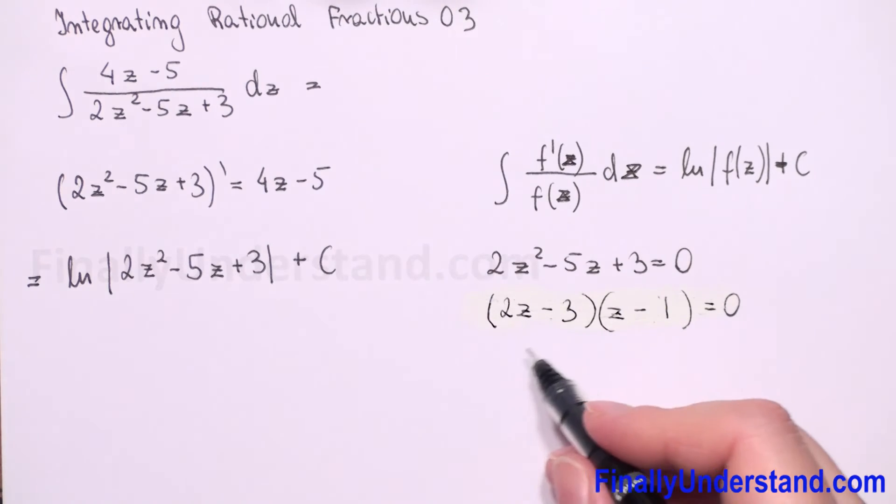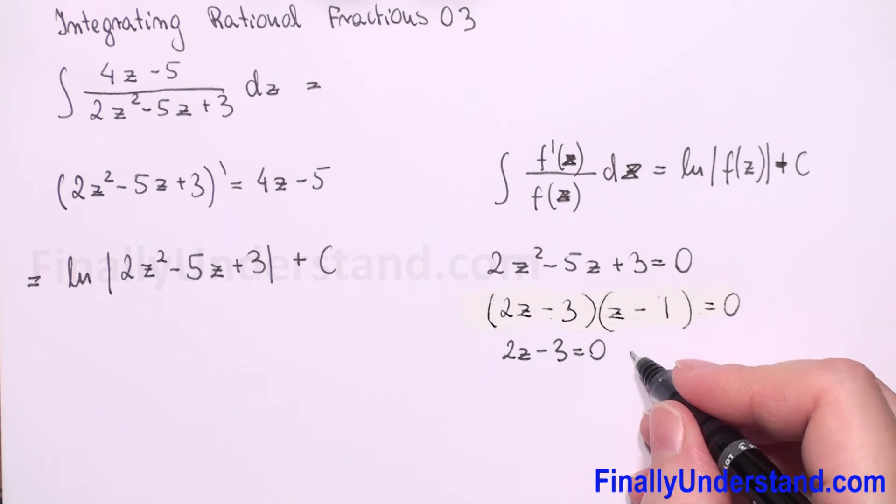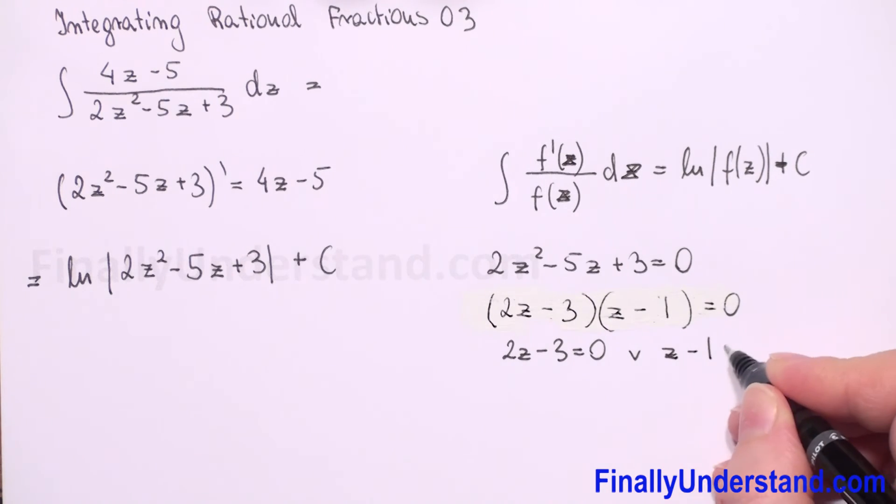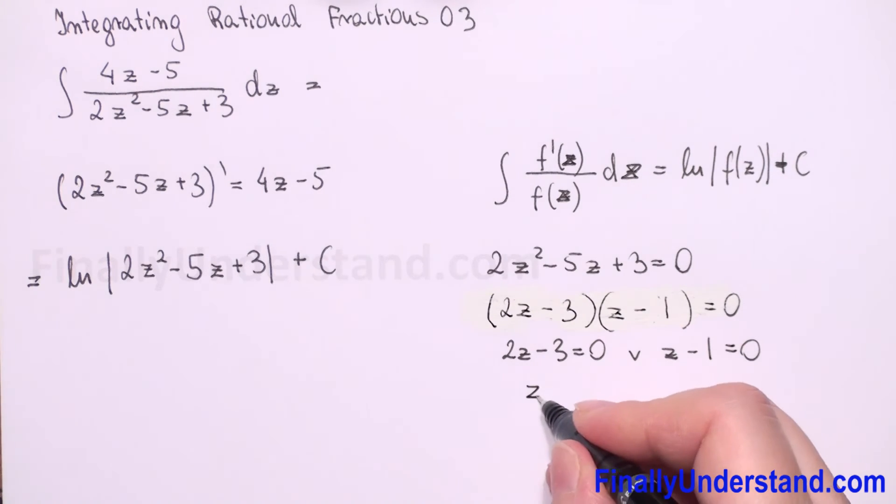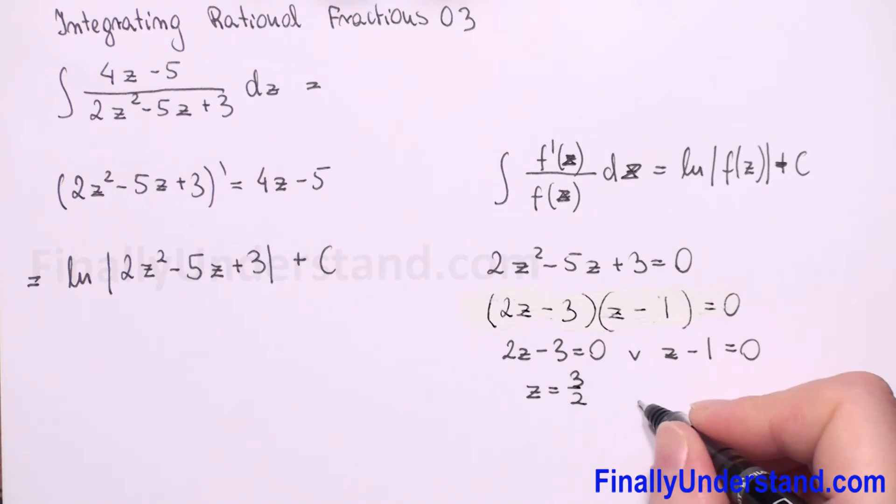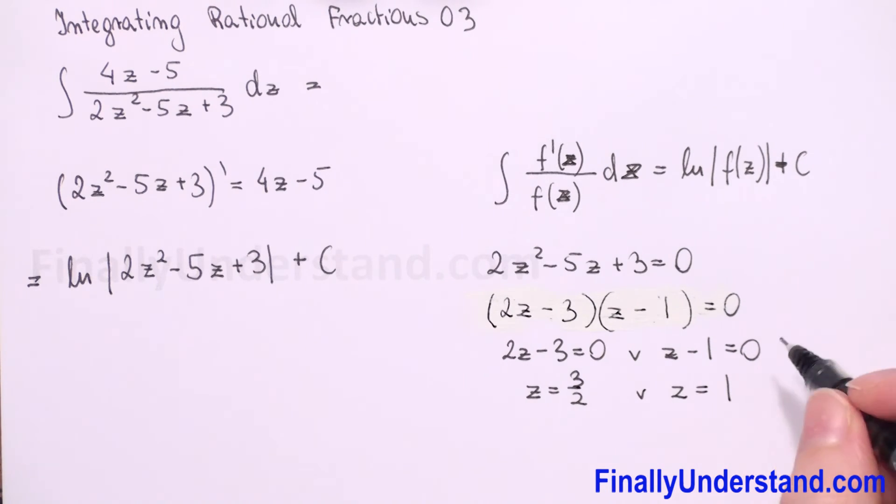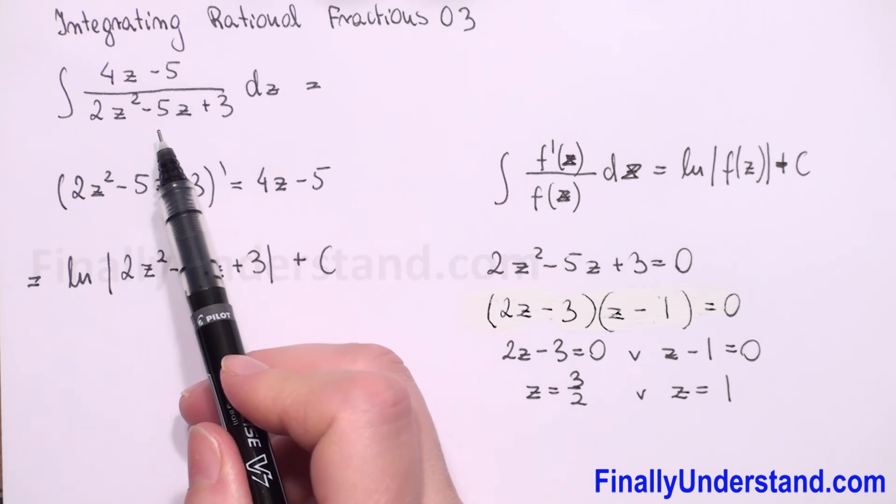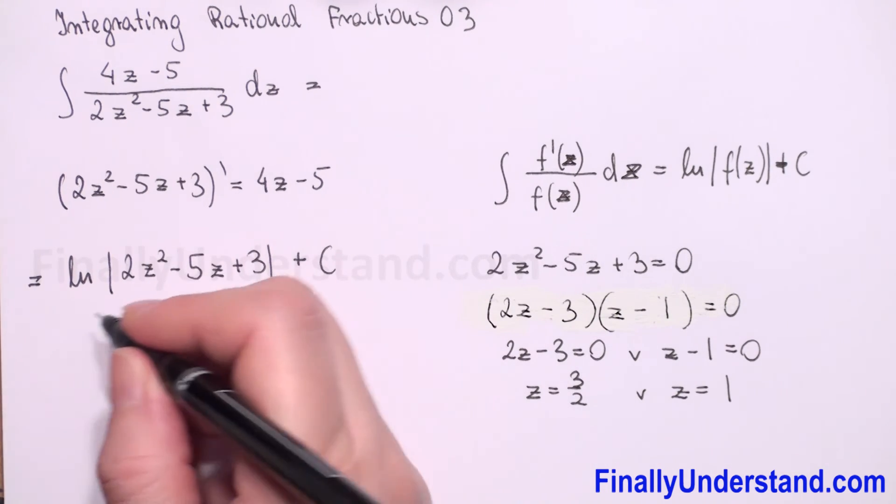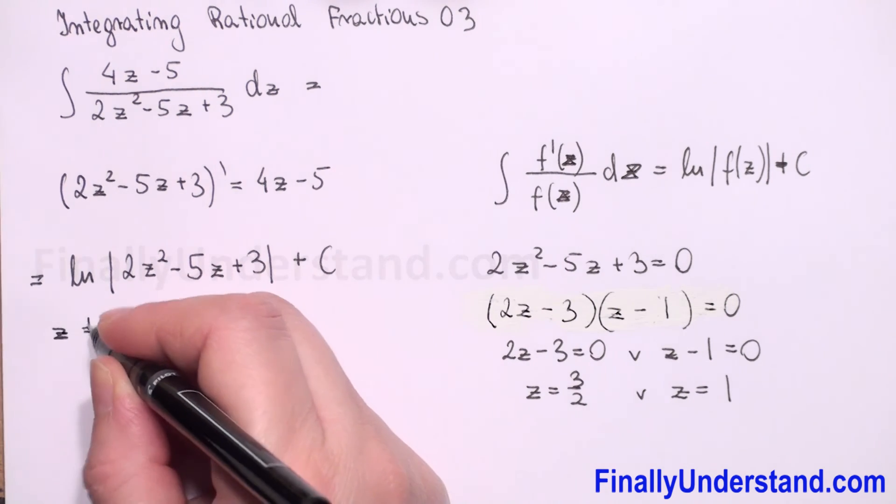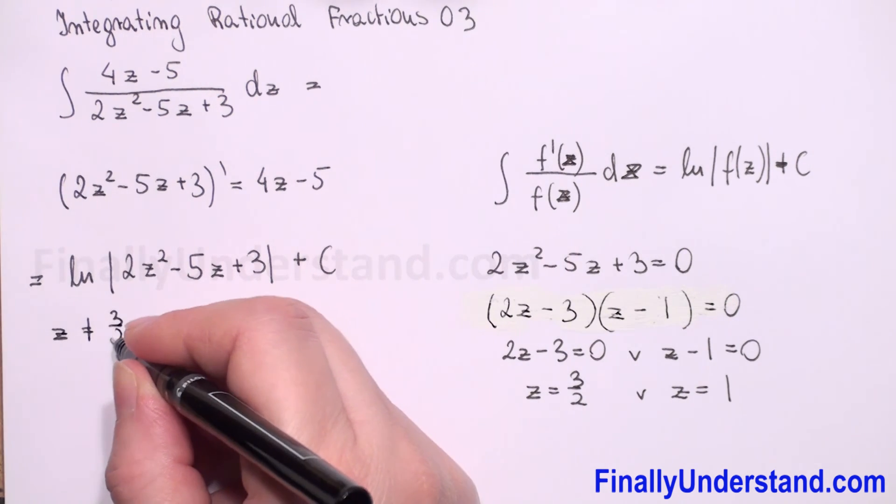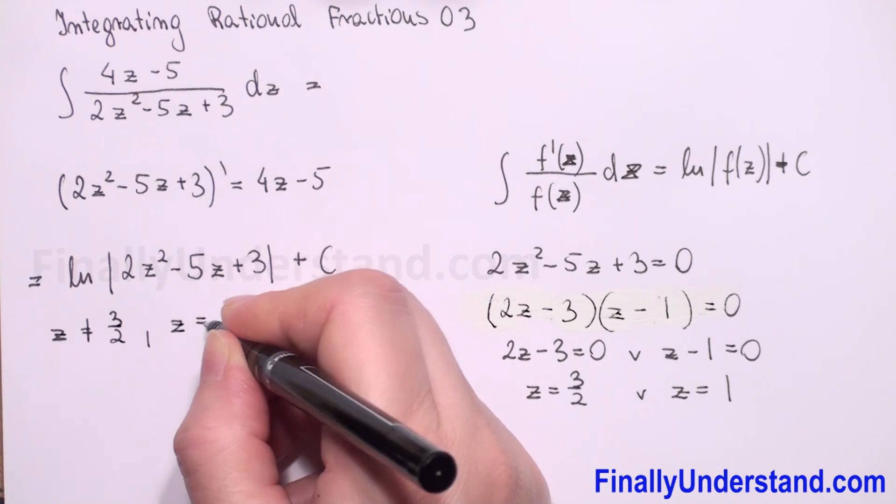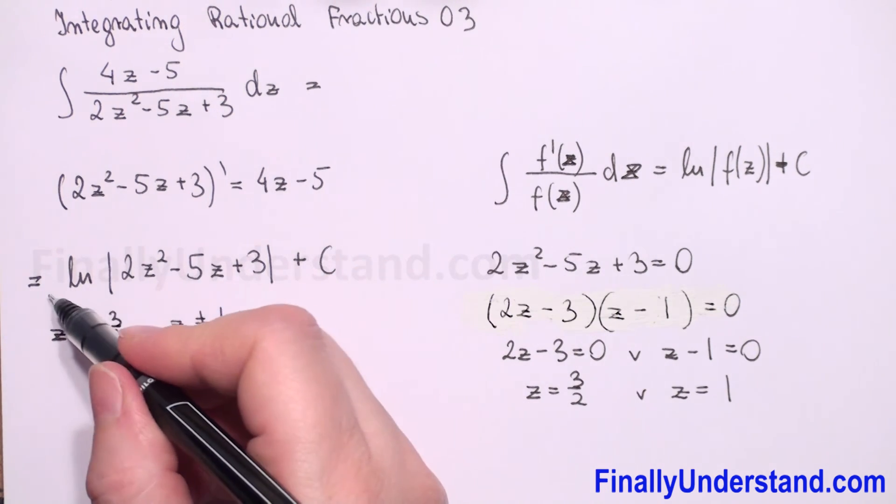So now we have to solve two equations 2z minus 3 is equal 0 or z minus 1 is equal 0. So z is equal 3 over 2 or z is equal 1. For z equals 3 over 2 and z equals 1 our denominator will be 0. We cannot have 0 in denominator so we have to put that z must be different than 3 over 2 and z must be different than 1. So this is my solution.